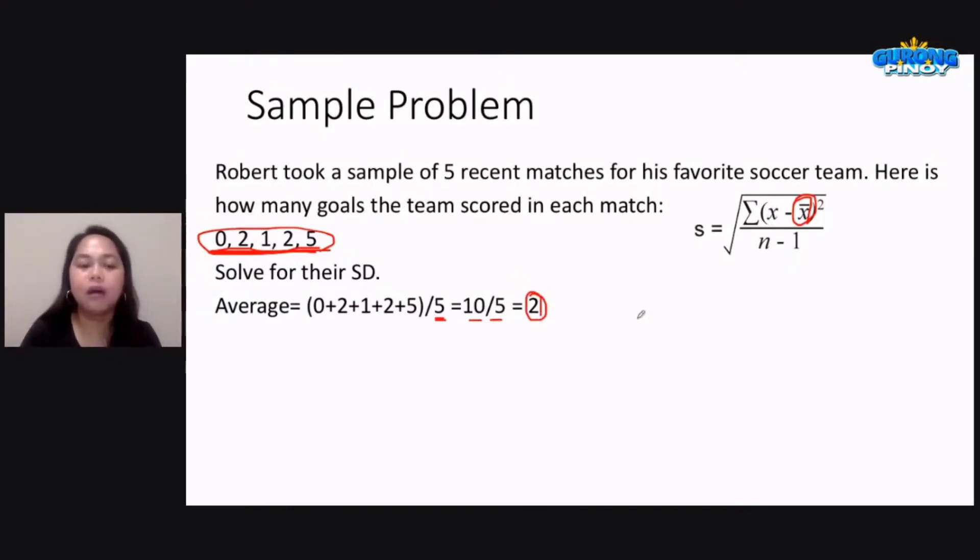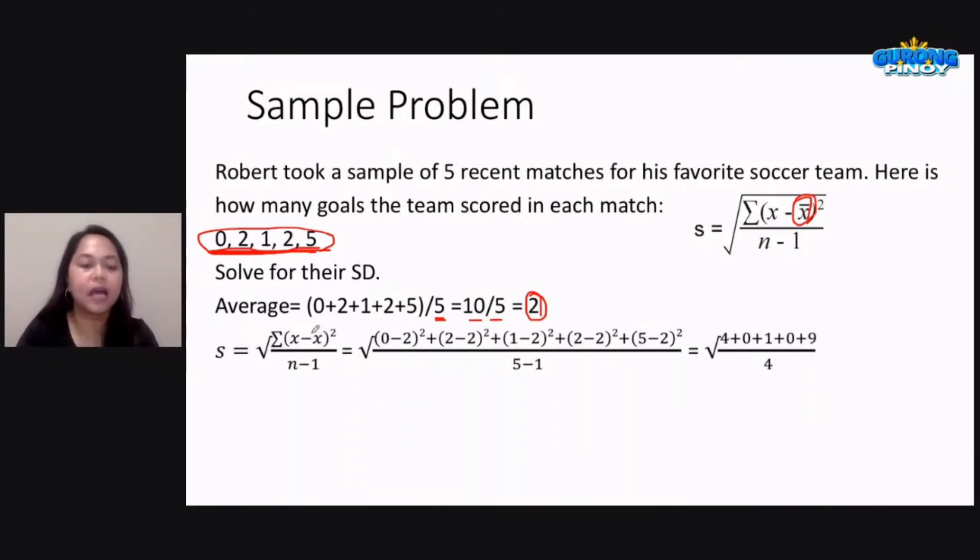And we proceed now to solving our standard deviation. So standard deviation, again, that should be the square root of the summation of x minus x bar, x minus the mean, the quantity squared, over n minus 1. So we get the summation of this.